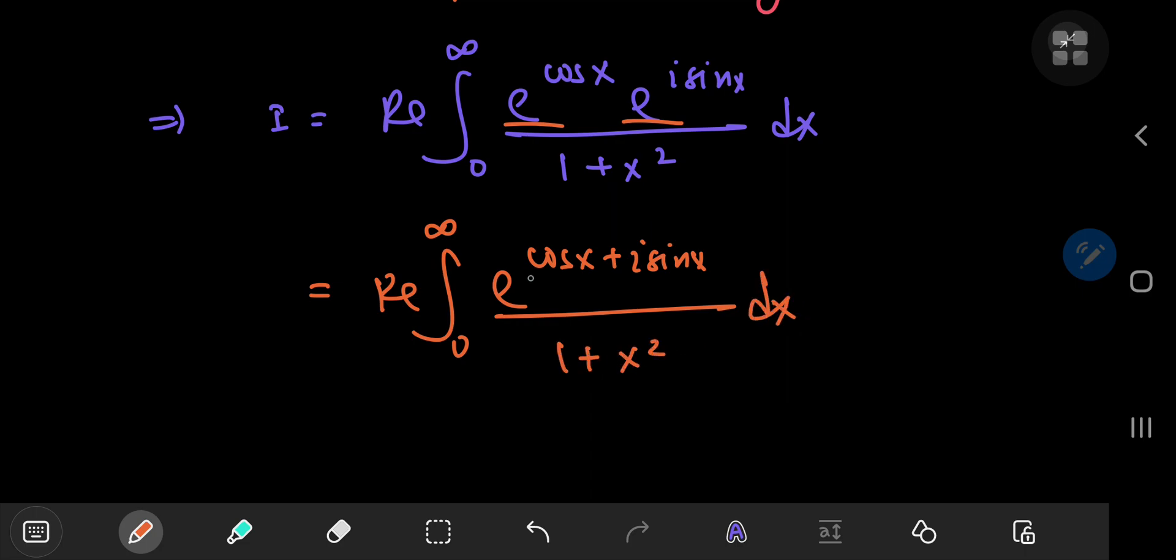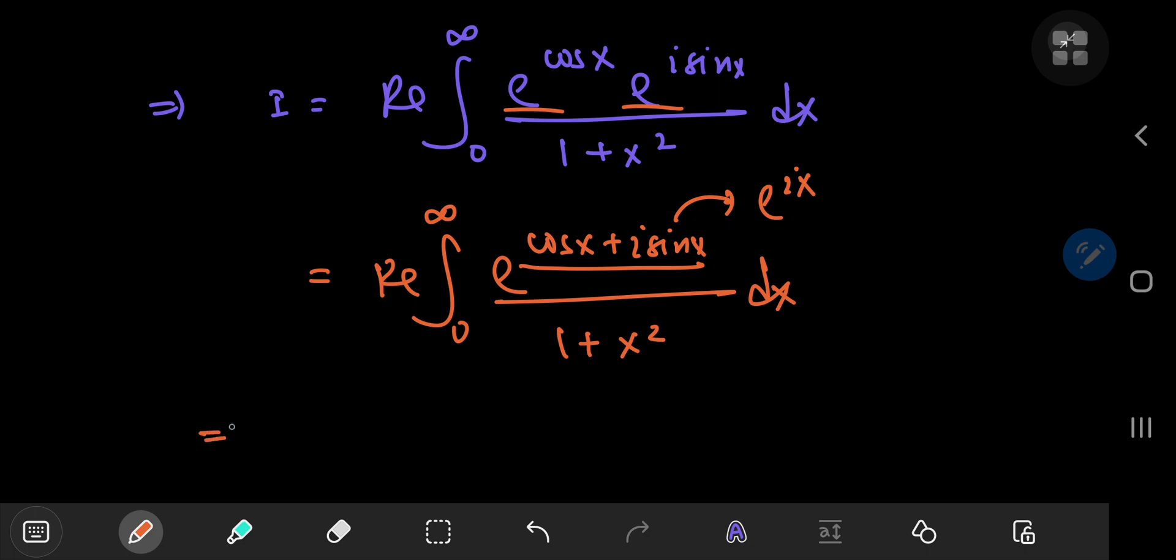And immediately we notice we can again apply Euler's formula because this is just e to the ix. So this implies that the integral I is the integral from 0 to infinity of e to the e to the ix divided by 1 plus x squared. So we have an exponential to an exponential.